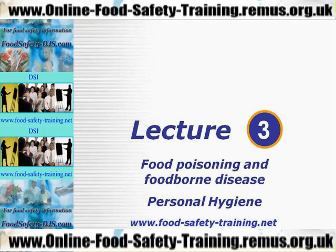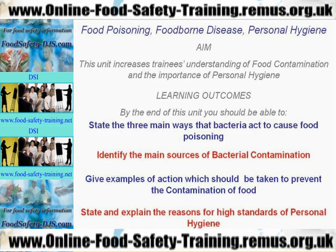Time for lecture 3 then: food poisoning and foodborne disease and personal hygiene. The aim of this unit is to increase your understanding of food contamination and the importance of personal hygiene. By the end of this unit you should be able to state the three main ways that bacteria act to cause food poisoning, identify the main sources of bacterial contamination, give examples of action which should be taken to prevent the contamination of food, and state and explain the reasons for high standards of personal hygiene.